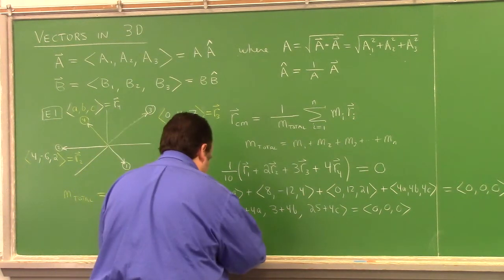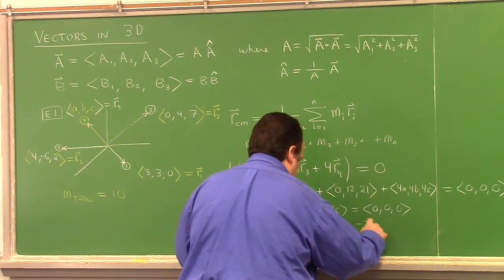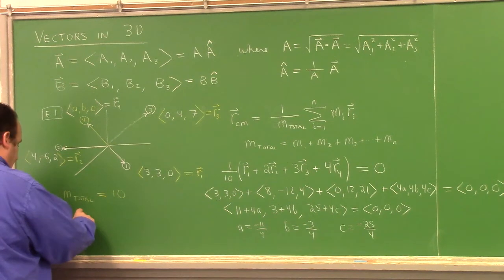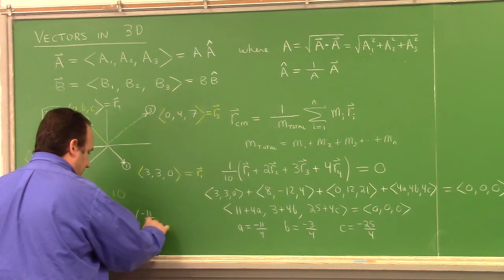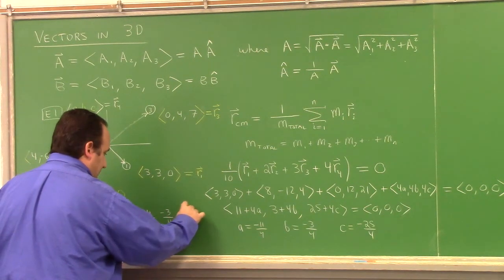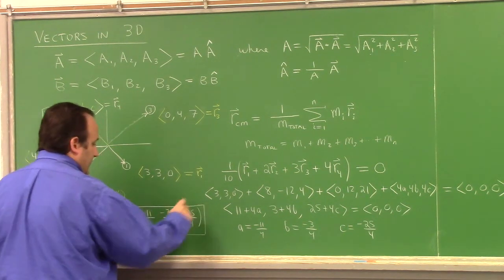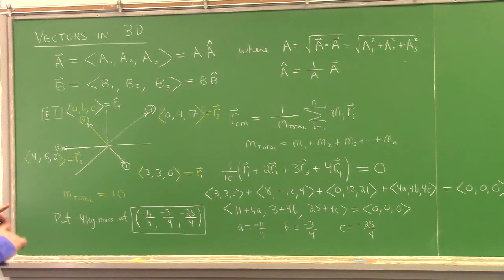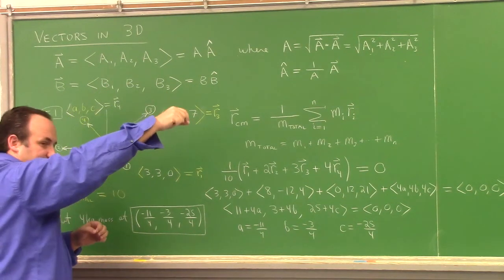So a = -11/4, b = -3/4, and c = -25/4. The answer is to put the 4-kilogram mass at the point (-11/4, -3/4, -25/4). You can describe that as either a point in space or as a position vector — two different ways of describing the same physical location. We always have this freedom, and it's used without comment in physics and engineering throughout.